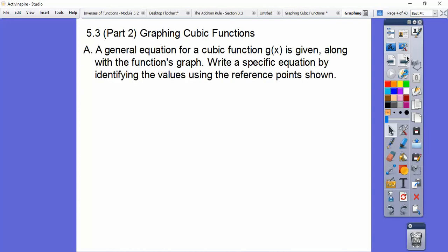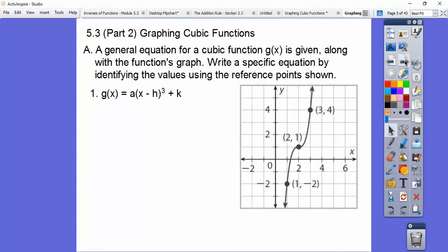So here we go. A general equation for a cubic function g(x) is given along with the function's graph. Write a specific equation by identifying the values using the reference points shown. They give us this graph, and they give us an equation that has a hint - it has a vertical stretch. So h,k is this guy, (2, 1) right there. So we plug that in. Now we just got to figure out a.